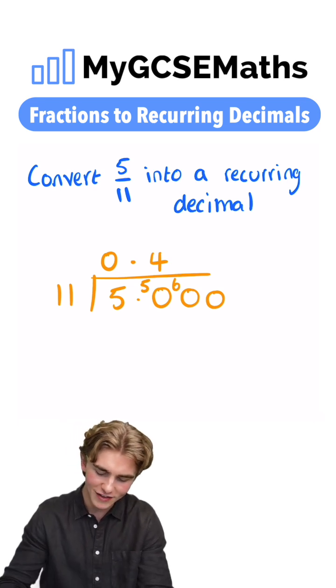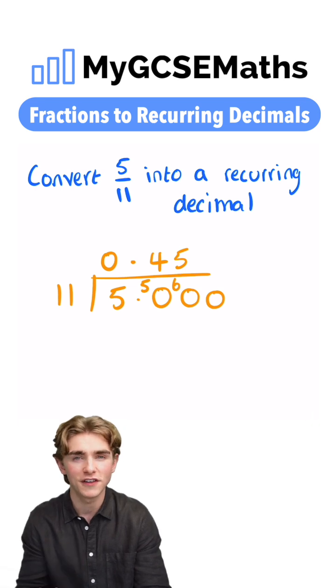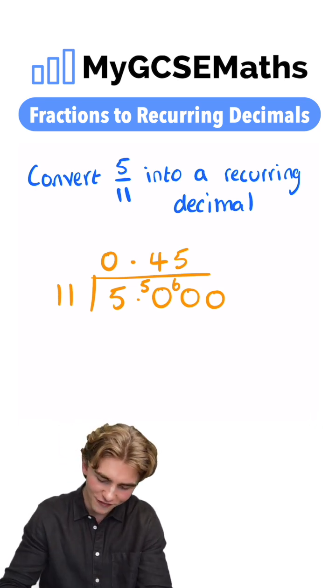Next we're going to do 11s into 60. This is going to be 5. 11 times 5 is 55, but we actually have 60, so it's going to be a remainder of 5.